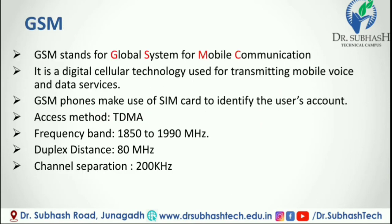Next topic is GSM. GSM and CDMA are short forms for the two major radio systems used in cell phones. These two technologies differ in the way calls and data travel over the mobile phone network. GSM stands for Global System for Mobile Communication. It is a digital cellular technology used for transmitting mobile voice and data services. GSM phones make use of a SIM card to identify the user's account, allowing users to quickly move their phone number from one phone to another by simply moving the SIM card.